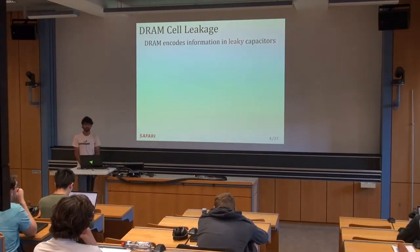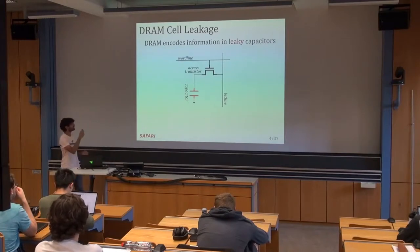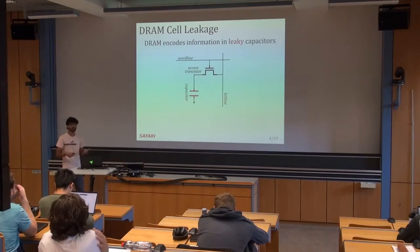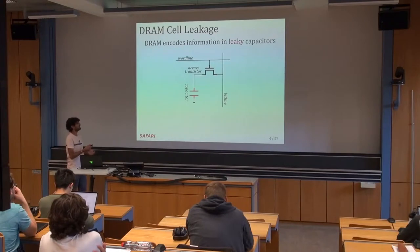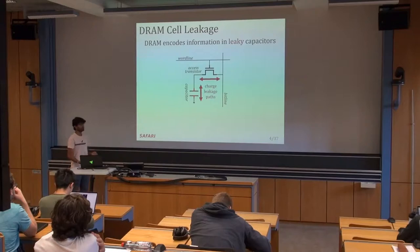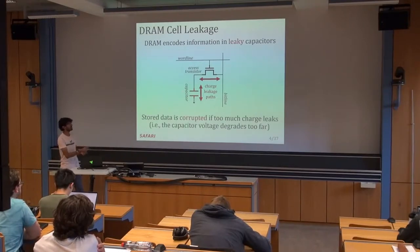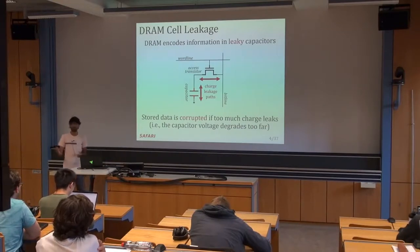Fundamentally, DRAM stores charge in leaky capacitors and encodes data using leaky capacitors. Here's a simple diagram of what a DRAM cell looks like. We show a capacitor in red where data is encoded as either a one or a zero depending on whether the capacitor is charged or discharged, and we have an access transistor used to write to or read from the cell. There are a number of charge leakage paths by which charge can enter or exit the capacitor, and the stored data can be corrupted if too much charge leaks.